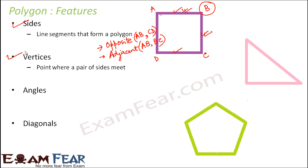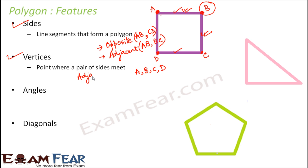The next feature is vertices. Vertices is the plural of vertex. Vertices refer to the points where the sides meet. In polygon ABCD, A is where AB and AD meet, B is where AB and BC meet, C is where BC and CD meet, and D is where AD and CD meet. So A, B, C, D are the vertices.